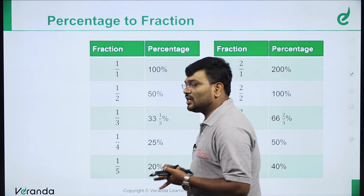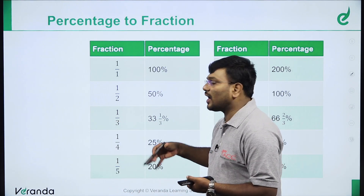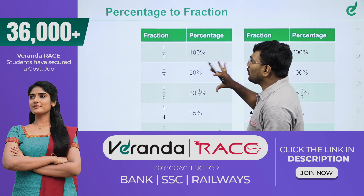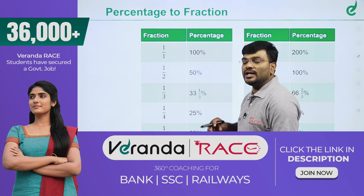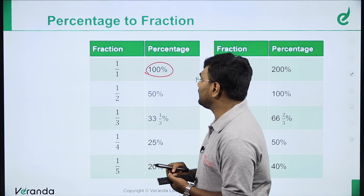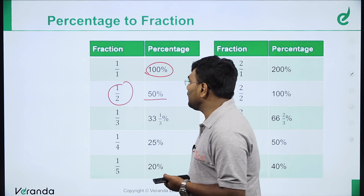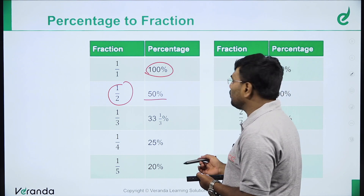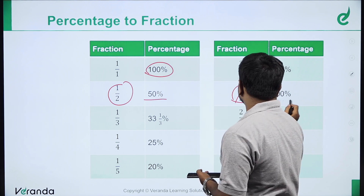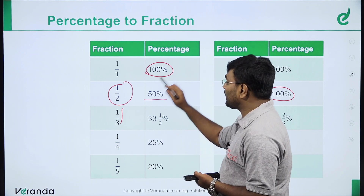In the exam, percentage is very important. If you know the basic material you will save time. For example, 1 by 1 is 100%. 1 by 2 is 50%. 2 by 2 is actually the same as 1 by 1, which is already 100%. For 1 by 3, to convert any fraction to percentage multiply by 100.